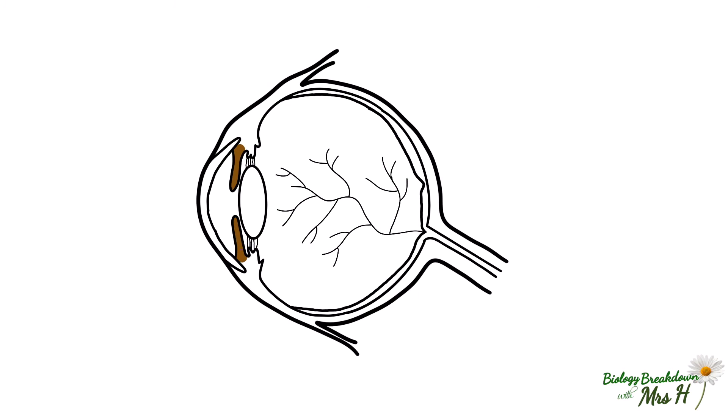If we look inside the eye, we can see many more structures. This is what the iris and pupil look like from the side view. You can see clearly that the pupil is the hole that allows light to pass into the eye. The sclera is the tough white outer layer of the whole eyeball, and at the front of the eye, the sclera is continuous with the cornea, which is transparent, so refracts light into the eye.